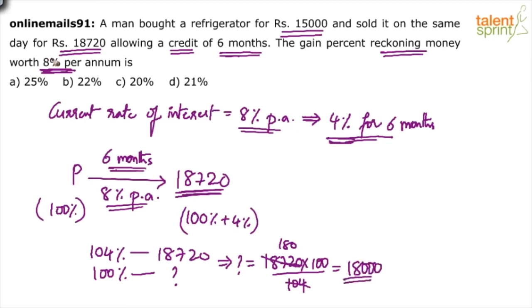Forget about the refrigerator case for a moment. Consider this scenario: today, if I invest 18,000 rupees in the bank, after six months the bank will pay me 18,720. What we have established is: 18,720 is the total amount, six months is the time period, eight percent per annum is the rate of interest, so my principal should be 18,000. If I give 18,000 rupees to the bank today, the bank would pay me 18,720 after six months.